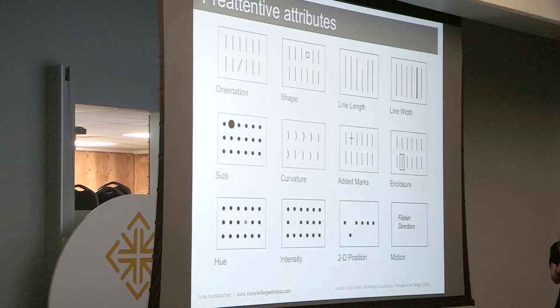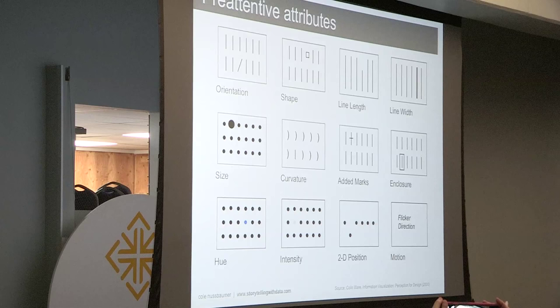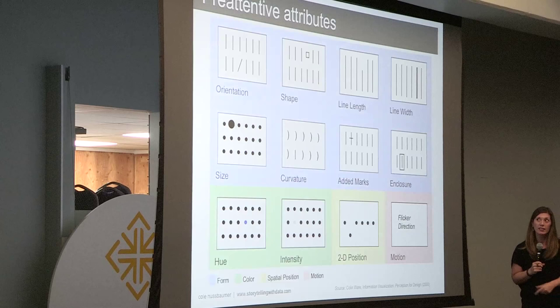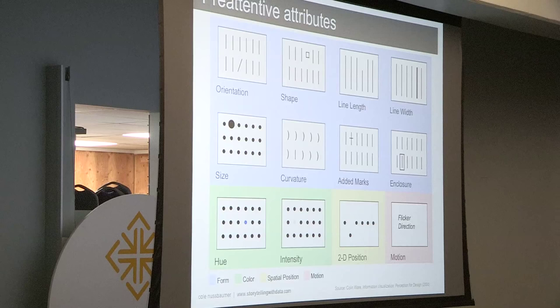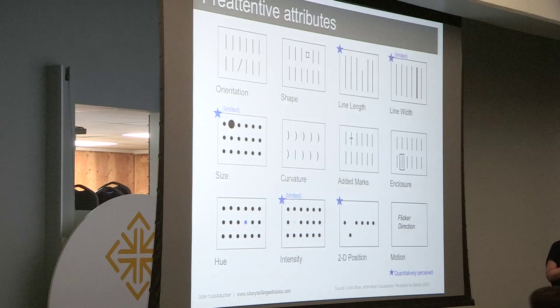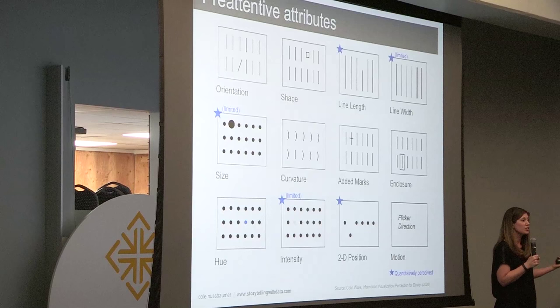Here are the pre-attentive attributes. Notice as your eye scans across the screen how you're drawn to the one element within each box that looks different — you don't have to devote any conscious thought to looking for it. We can categorize pre-attentive attributes into four categories: form, color, spatial position, and motion. One thing to understand is that people tend to associate quantity to values with some but not others. For example, most people consider a long line to represent a greater value than a short line — that's why bar charts are intuitive. We don't think of color in the same way. This tells us which attributes can encode quantitative information and which should be used as categorical differentiators.